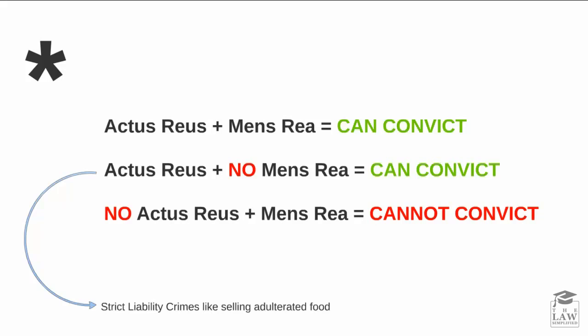We have defined actus reus as an act or an omission. An actus reus can be committed by doing something which results in a certain consequence, or it could be committed voluntarily as a conduct itself, without a particular result. You can define crimes as either result crimes or conduct crimes. Conduct crimes mean that your conduct itself constitutes the crime — for instance, perjury in court. A result crime is one where the result has to happen for the crime to be committed — a simple example being murder, where the person has to die in order for you to be convicted of it.